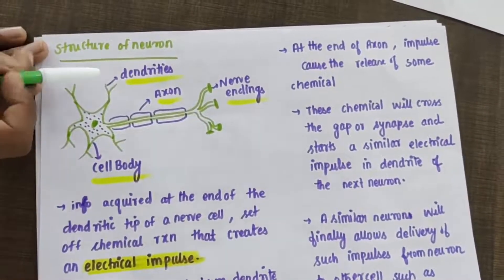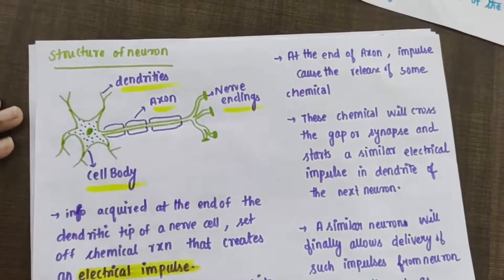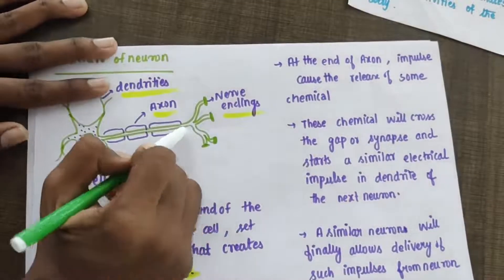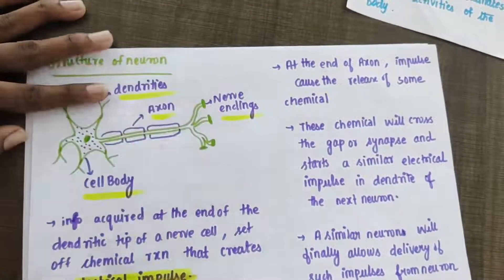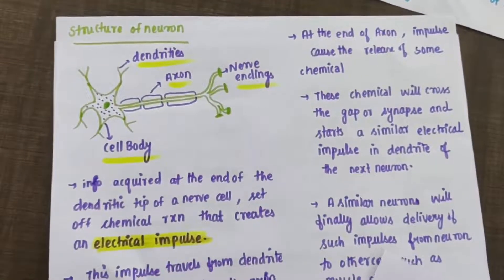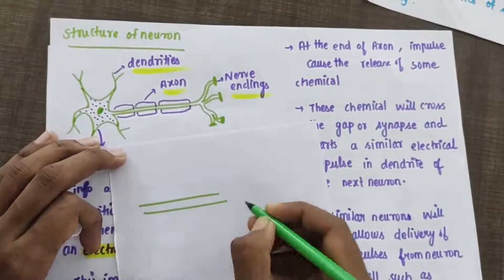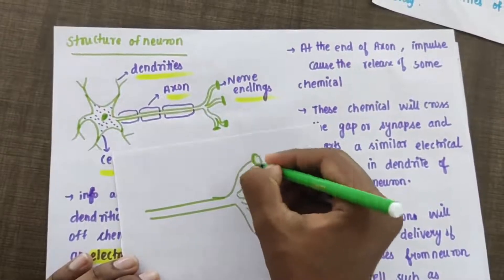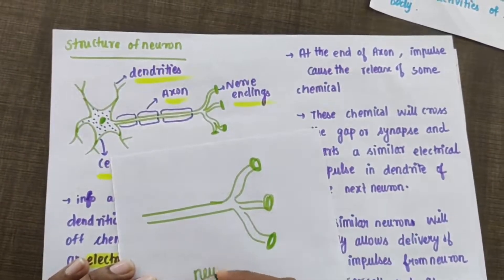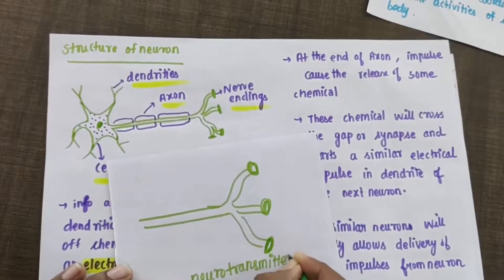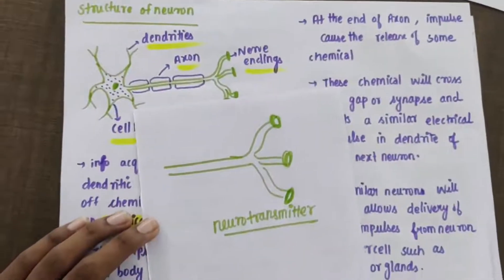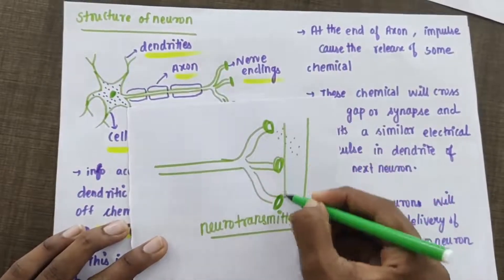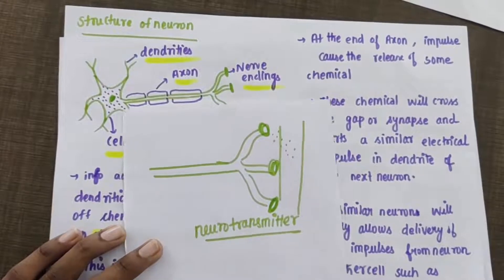When you touch a hot object, the information first enters the dendrites, then travels to the cell body, then along the axon to the nerve endings. At the nerve endings, chemicals called neurotransmitters are released. These neurotransmitters are released into the gap between two neurons, which is called the synapse. Do not forget the word synapse — it is the gap between two neurons.